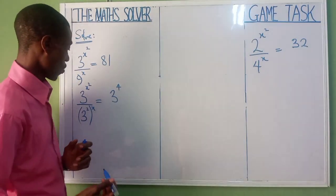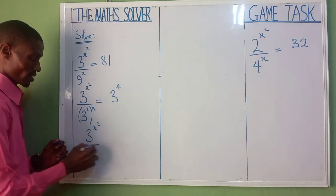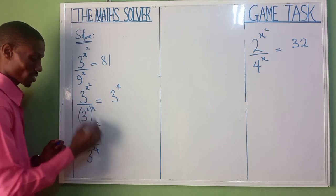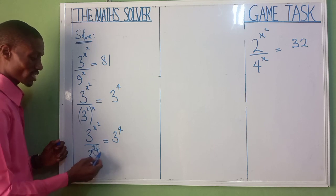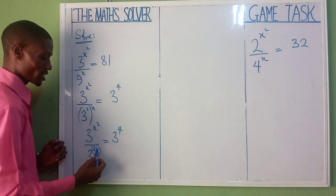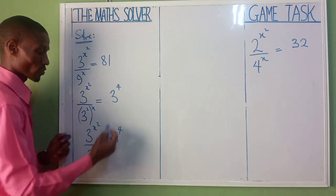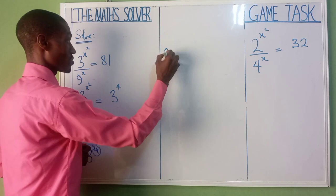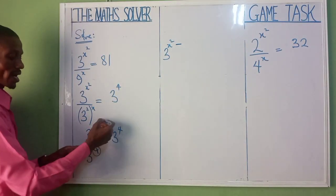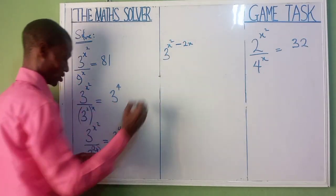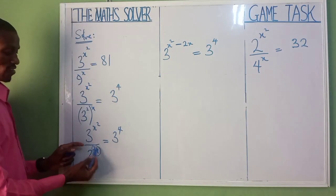So here, let's now apply the law of indices. Here as you have 3 raised power of x squared, because 3 raised power of 2x is already down, 2 times x, now equal to 3 raised power of 4. We now want to bring the one that's in the denominator up. The way that you are bringing it up, by the law of indices, you put minus in front of it. That is, we have 3 raised power of x squared minus 2x equal to 3 raised power of 4. We have brought this one up.